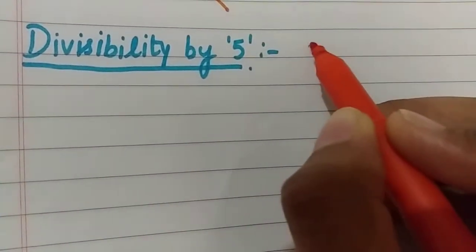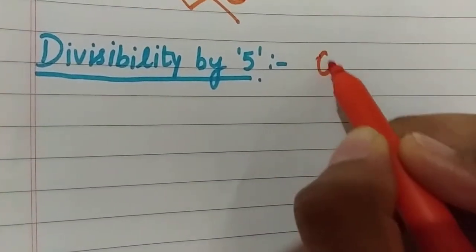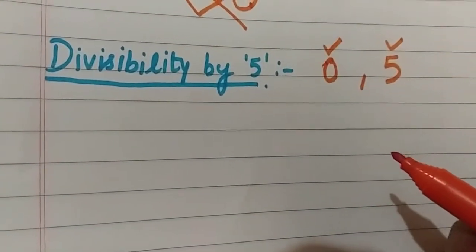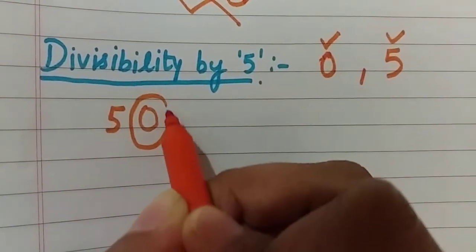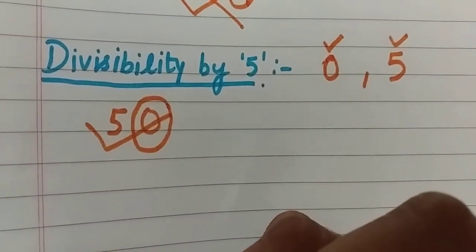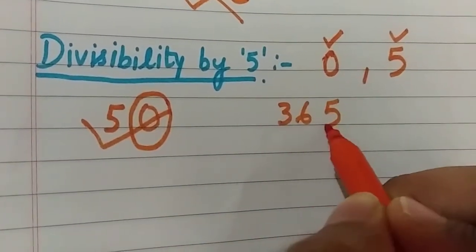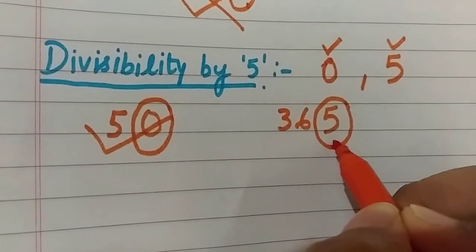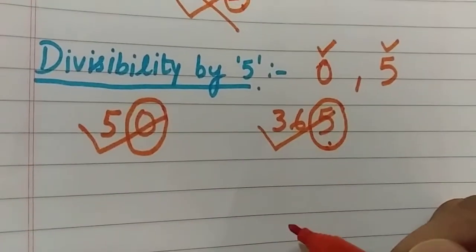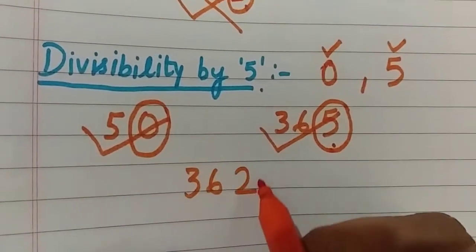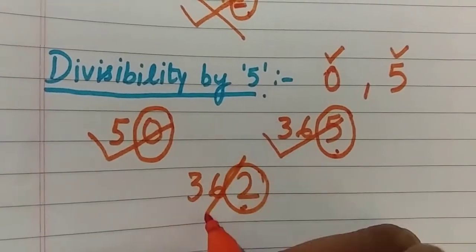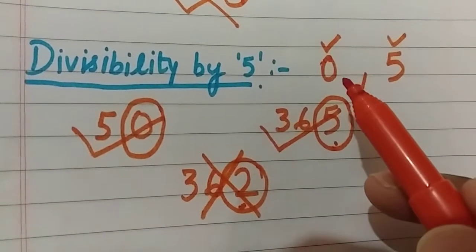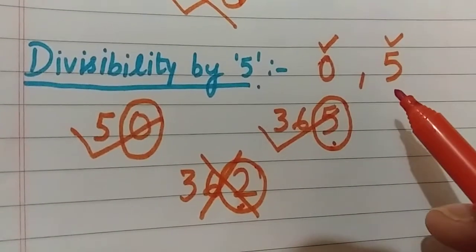A number is divisible by 5 if its ones place digit is 0 or 5. For example, 50 — the ones place digit is 0, so it is divisible by 5. For 365, the ones place digit is 5, so 365 is divisible by 5. If the ones digit is 2, it is neither 0 nor 5, so that number is not divisible by 5. This is the divisibility rule of 5.